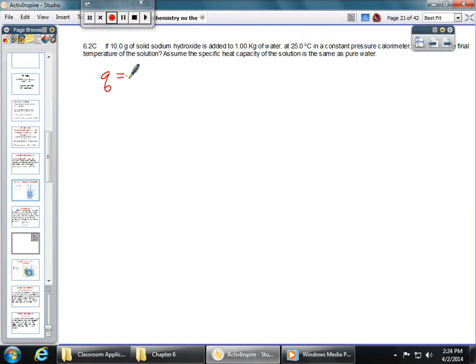Well, our equation is Q is equal to MC delta T. So we need to find out the Q. We need to know the mass. We need to know our specific heat capacity. And we also need to know our temperature change if we're going to find final temperature. Again, this is temperature final minus temperature initial is how we're going to calculate our delta T. So let's look at the problem and find out what we know. Well, we know that we're mixing together 10 grams of solid sodium hydroxide and 1 kilogram of water. So our mass is going to be 1 kilogram, or 1,000 grams,